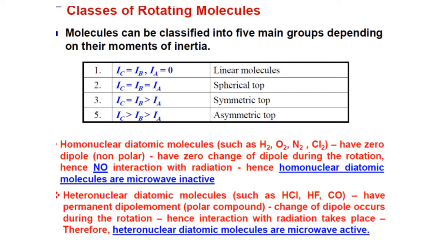To summarize the classification: if I_A equals zero and I_B equals I_C, we call it a linear molecule. If I_A equals I_B equals I_C, we call it a spherical top. If I_C equals I_B and is greater than I_A, that is a symmetric top. If I_C is greater than I_B and I_B is greater than I_A, that is an asymmetric top. Remember, homonuclear diatomic molecules like hydrogen, oxygen, nitrogen, and chlorine have zero dipole moment; they do not interact with microwave radiation and show no rotational spectra — they are microwave inactive.